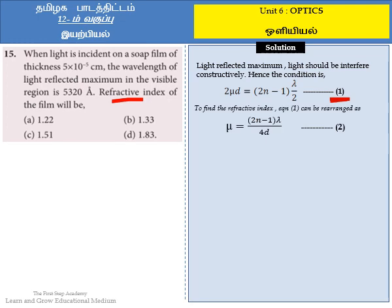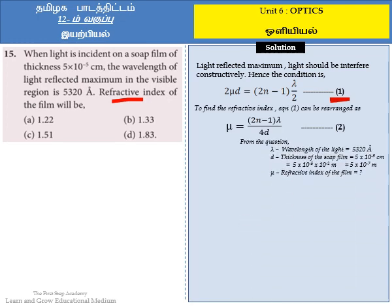I am going to rearrange equation 1 and write the expression as: μ = (2n−1) × λ / (4D). Here, μ is used as the refractive index instead of n, because n has been assigned for the order of refraction. So to represent the order of refraction we use n, and μ represents the refractive index.